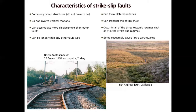Strike-slip faults, in nature, because of their mechanics and kinematics, usually already form as much longer structures in the Earth's crust. This type of structure can form plate boundaries between two tectonic plates. One of the best examples is the San Andreas Fault on the west coast. On the right side of the San Andreas Fault you'll be standing on the North American Plate; on the left side of this almost north-south striking structure you will be on the Pacific Plate. The Pacific Plate and North American Plate pass each other along the San Andreas Fault.